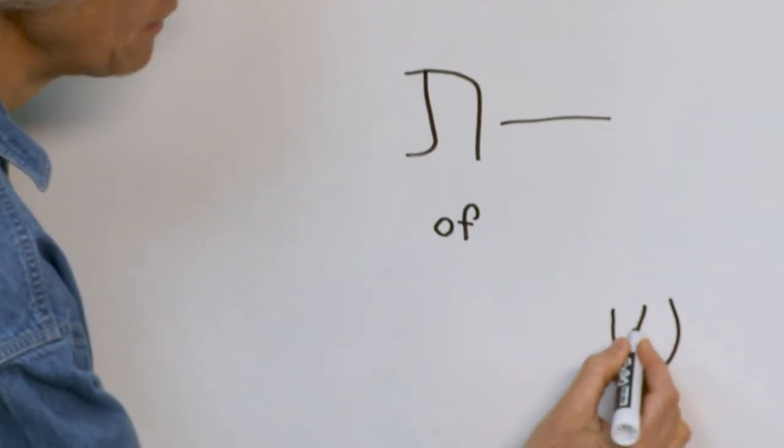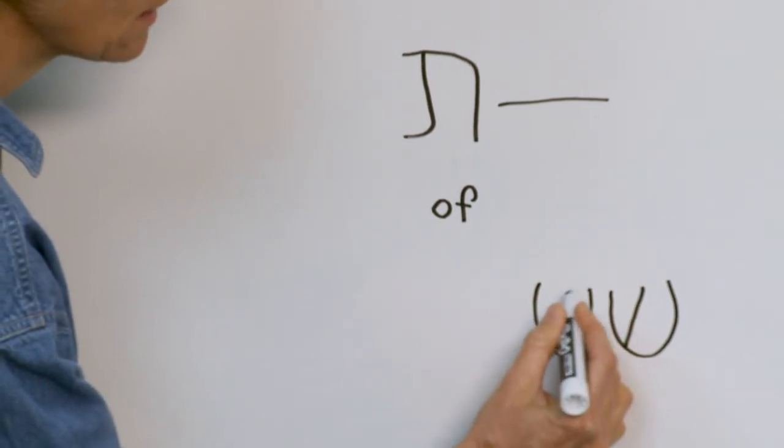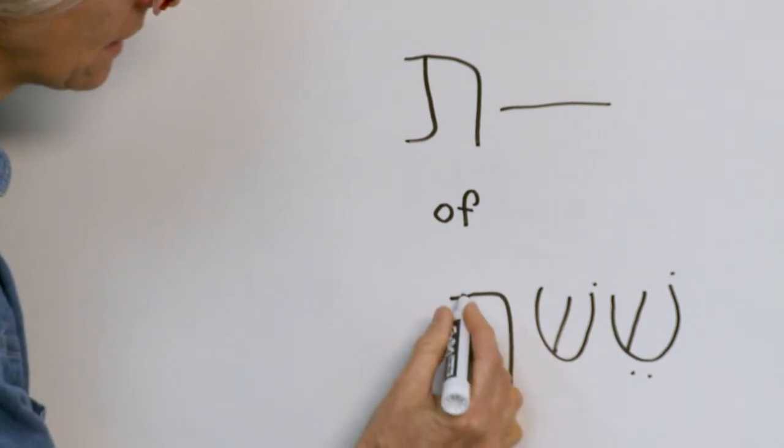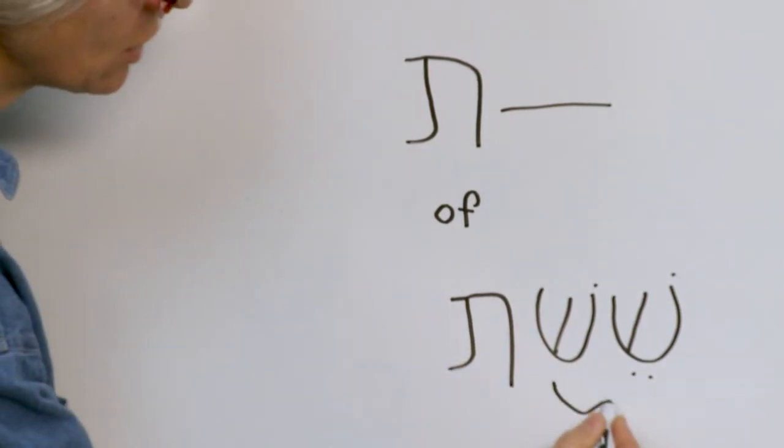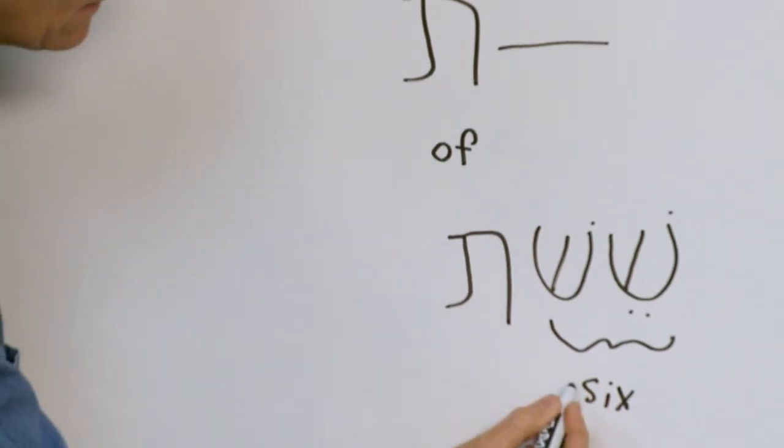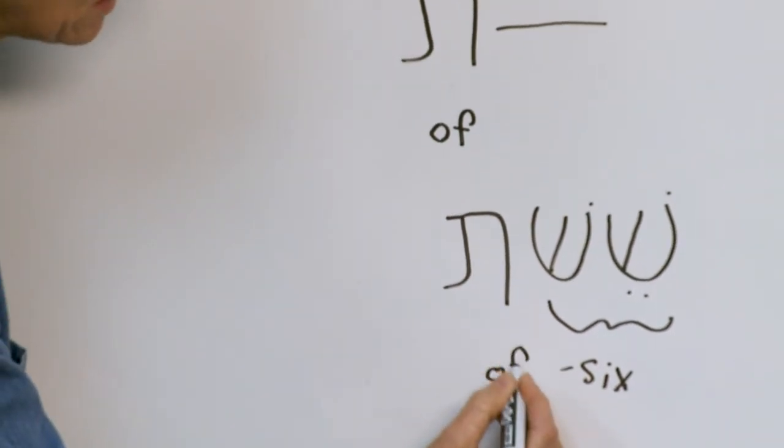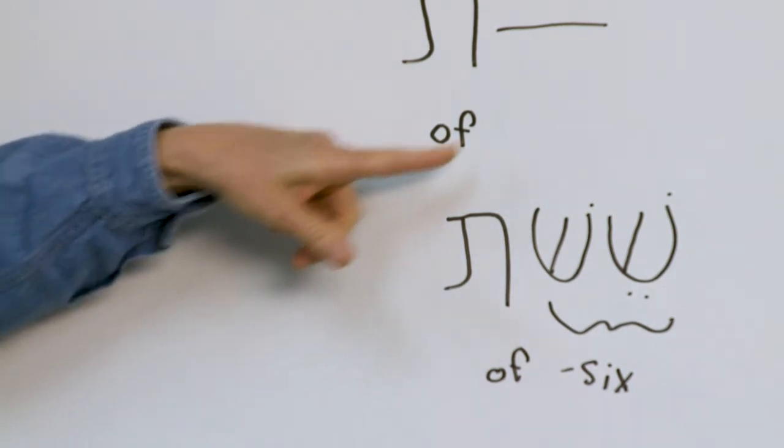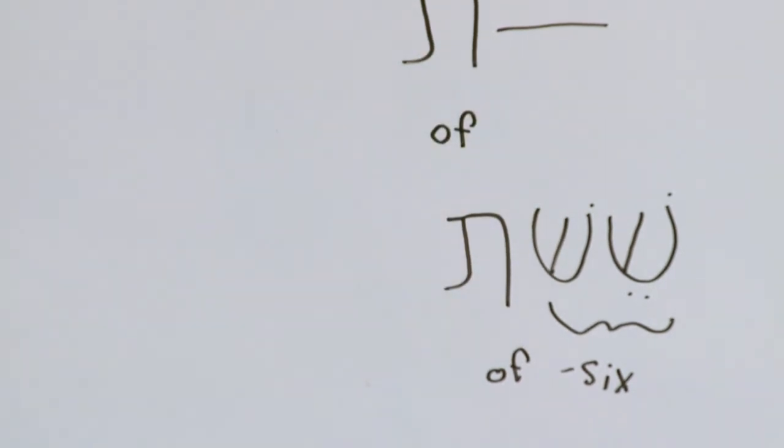So you'll see in the Bible, or in the Ten Commandments, you'll see sheeshit. The word sheesh is the root, which means six. And sheeshit means six of. Is this still part of the tav? It is. Of. Okay? So I'm just giving you an example of this particular tav. All right? So sheeshit means six of.